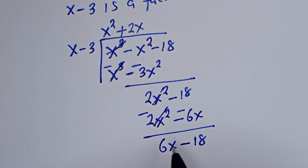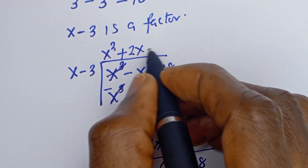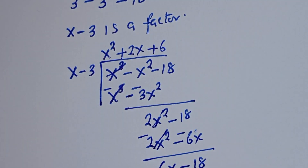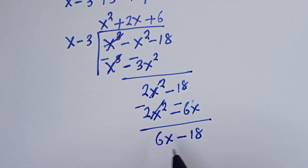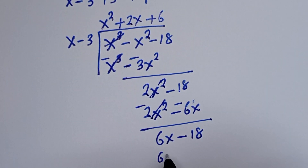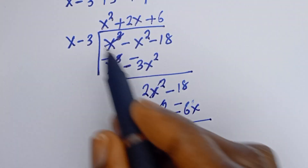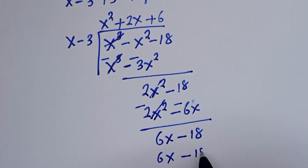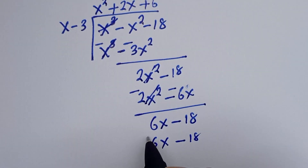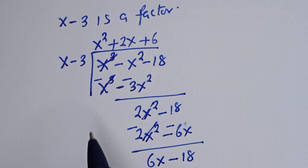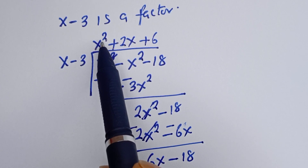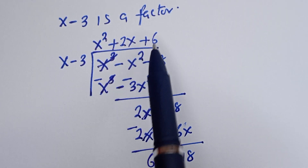Now s goes into 6s giving plus 6. 6 times s is 6s, and 6 times minus 3 is minus 18. Multiplying by minus 1, both terms cancel to 0. Therefore, the other factor of this equation is s squared plus 2s plus 6.